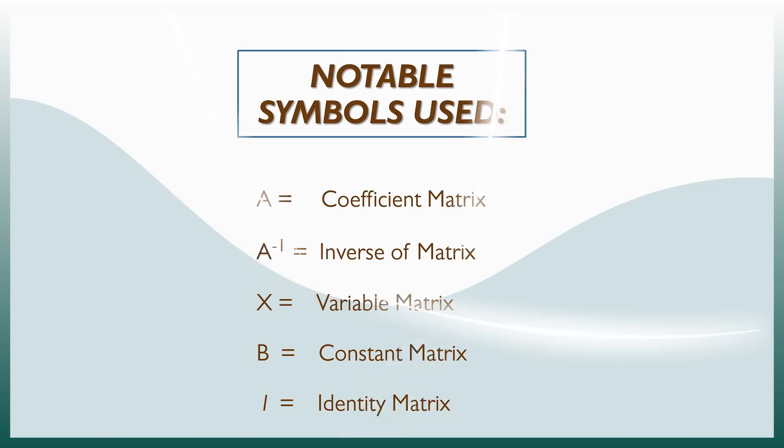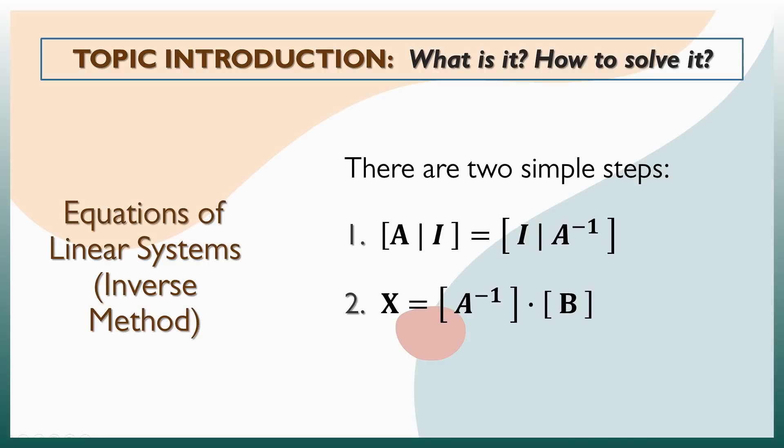Now, how do we solve it? There are two simple steps in solving for the inverse method. Step 1 is getting the inverse of the coefficient matrix using the Gauss-Jordan method or row reduction techniques, applying the necessary operations to A until it is reduced to I. The second step is simply multiplying the computed inverse with the constant matrix.